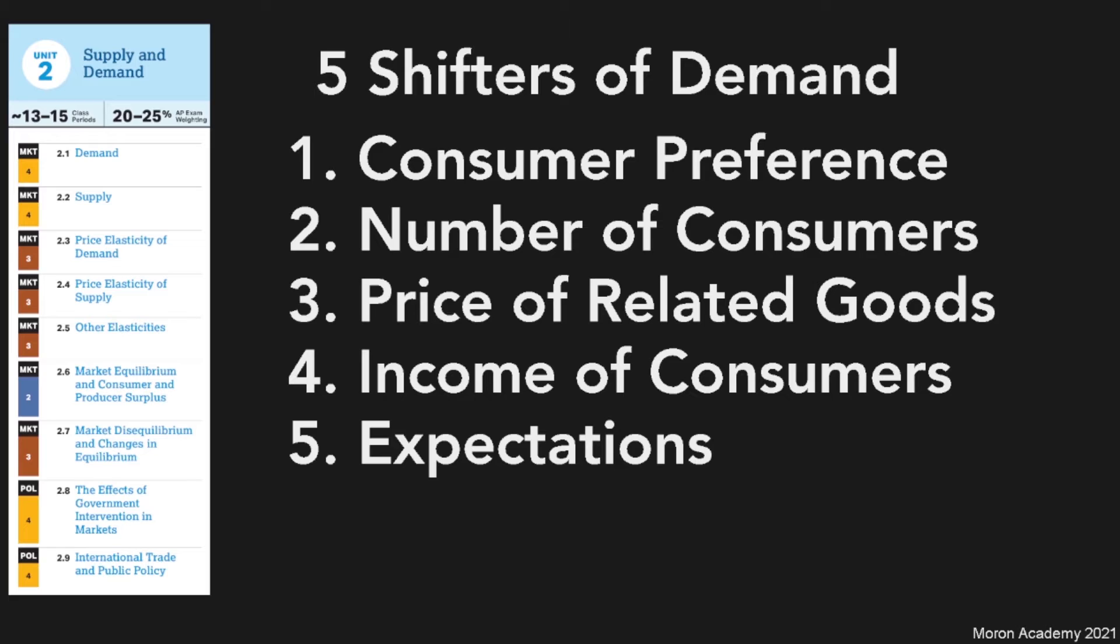Okay, first, consumer preference. Think of an example like a scientific study being published that shows that apple juice makes people dumb. Obviously, people don't want to be dumb, so they don't want to drink as much apple juice, so they start buying less apple juice. For number of consumers, it's really simple. More people will buy more things.